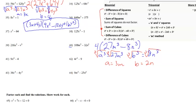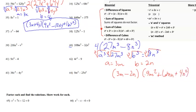Plugging into the difference of cubes formula, we get (3m − 2n)(9m² + 6mn + 4n²). These are your factors.